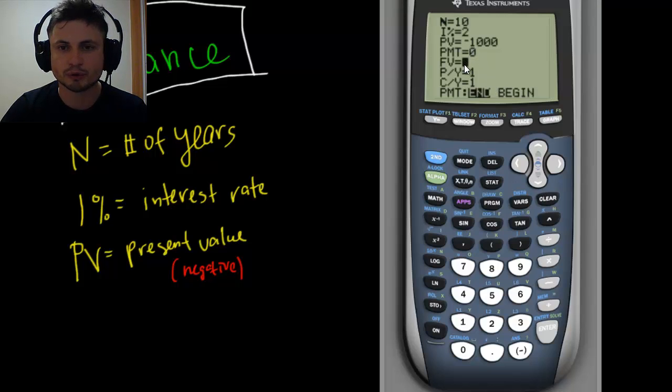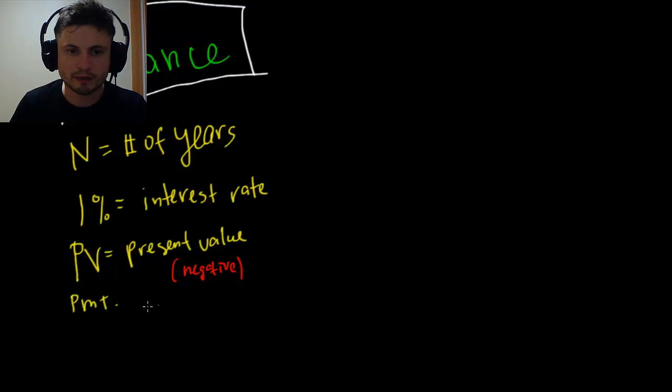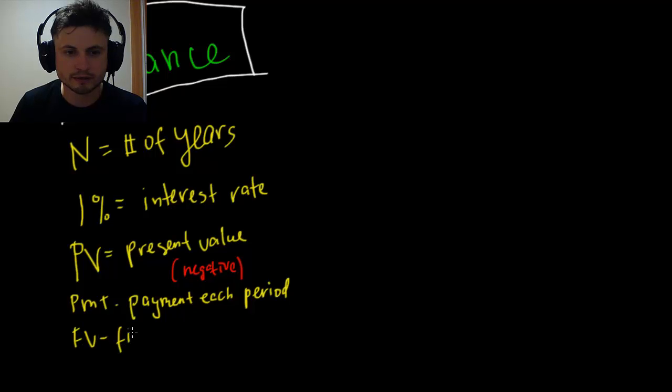FV is what we're looking for. We're going to leave it at zero and FV is basically your final value. So PMT and FV, I'm going to write them right here. PMT is payment each period and FV is your final value.